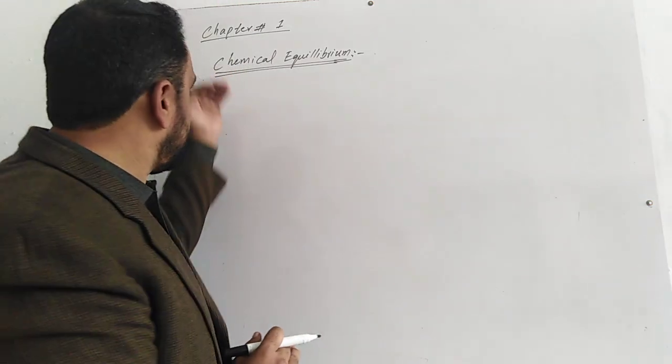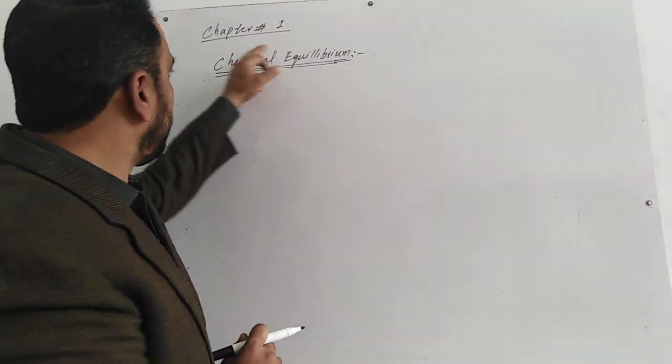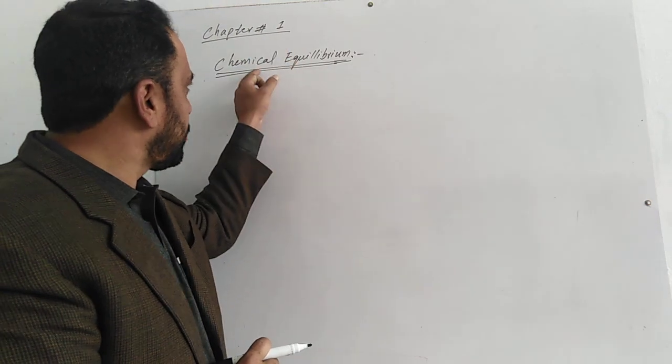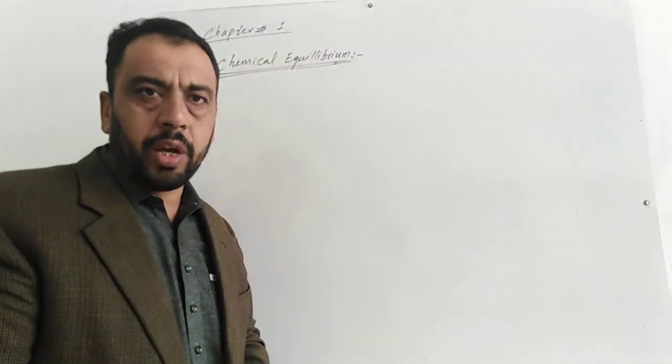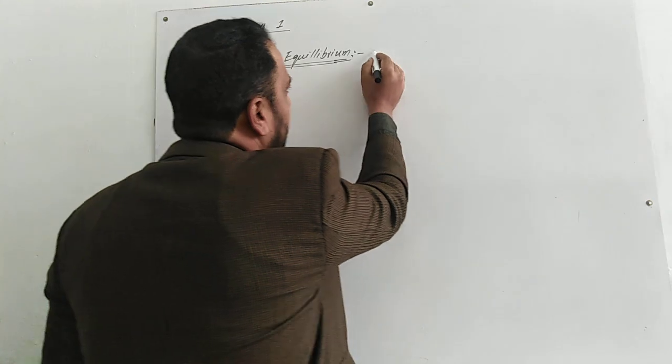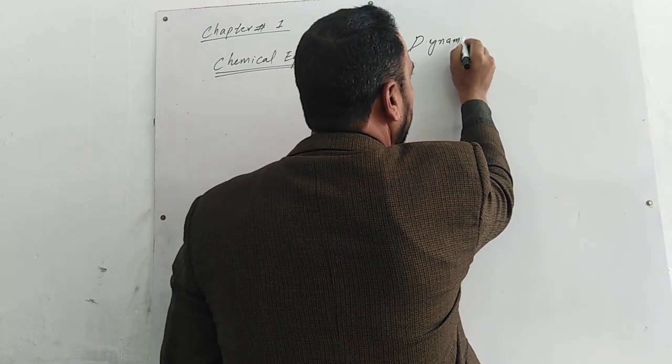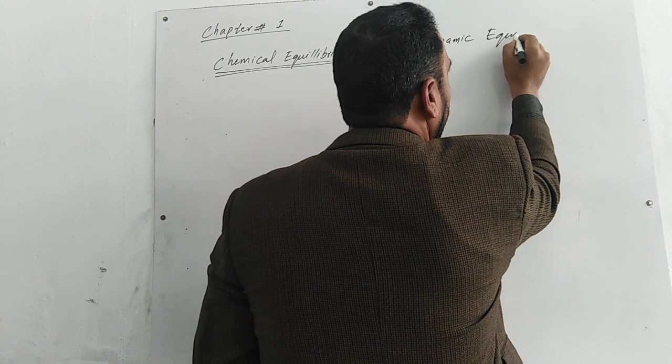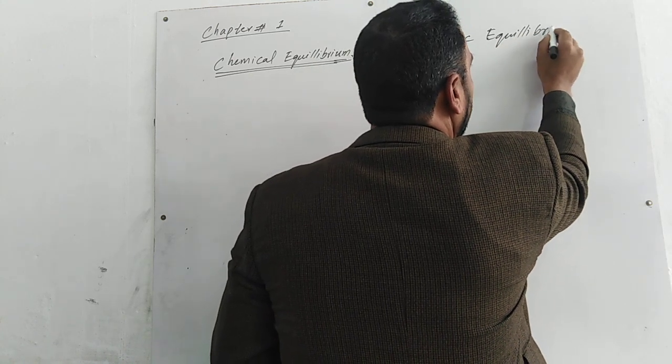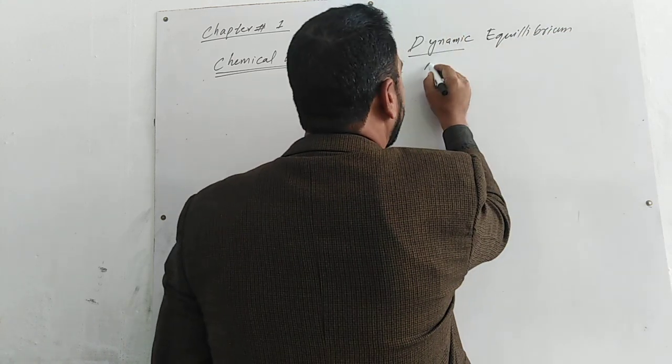Today we are going to discuss class 10 chemistry chapter number one: chemical equilibrium. Chemical equilibrium is dynamic equilibrium; dynamic means motion.